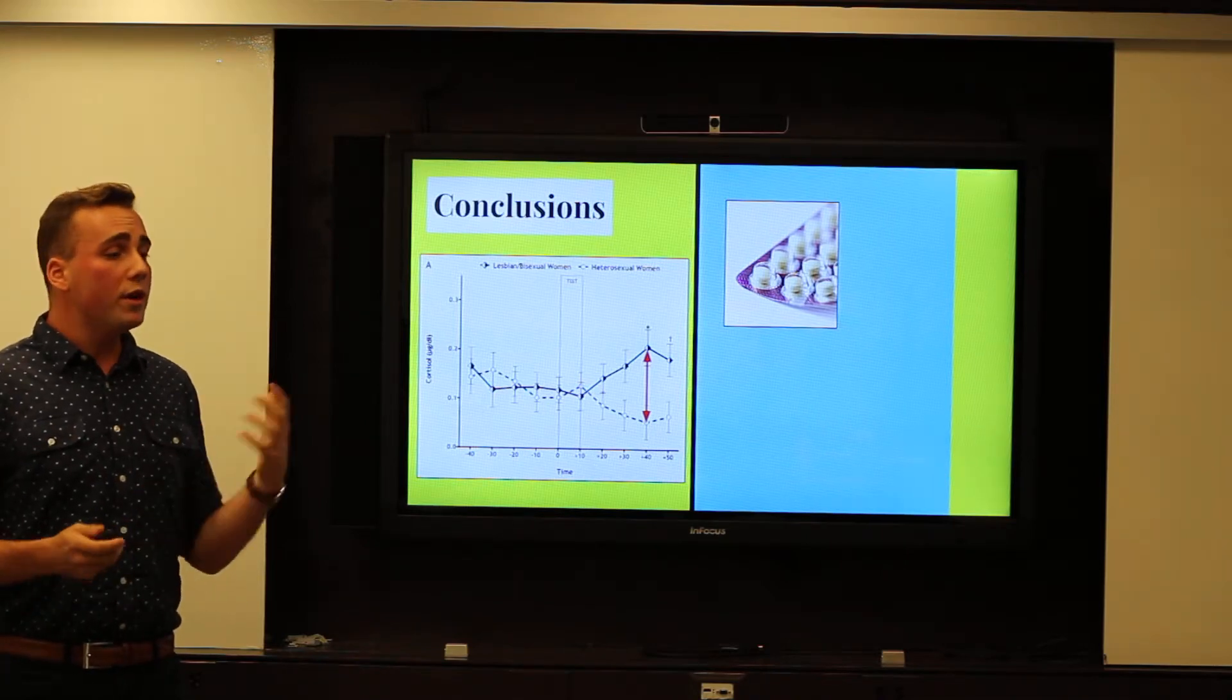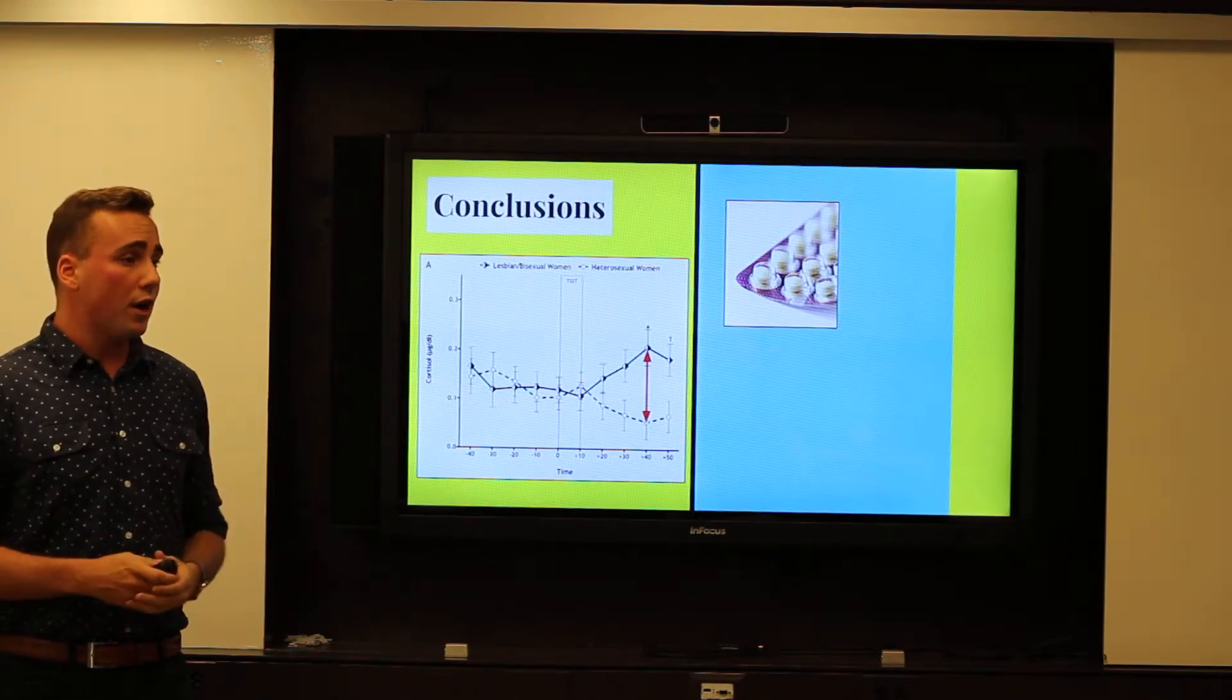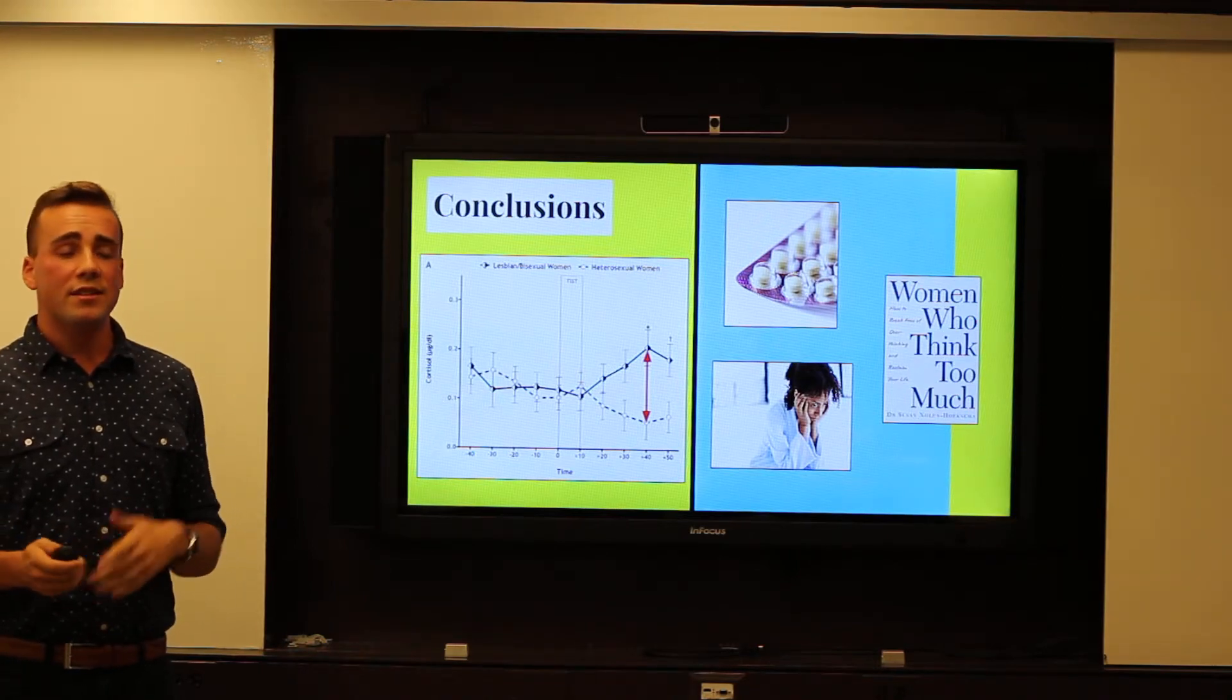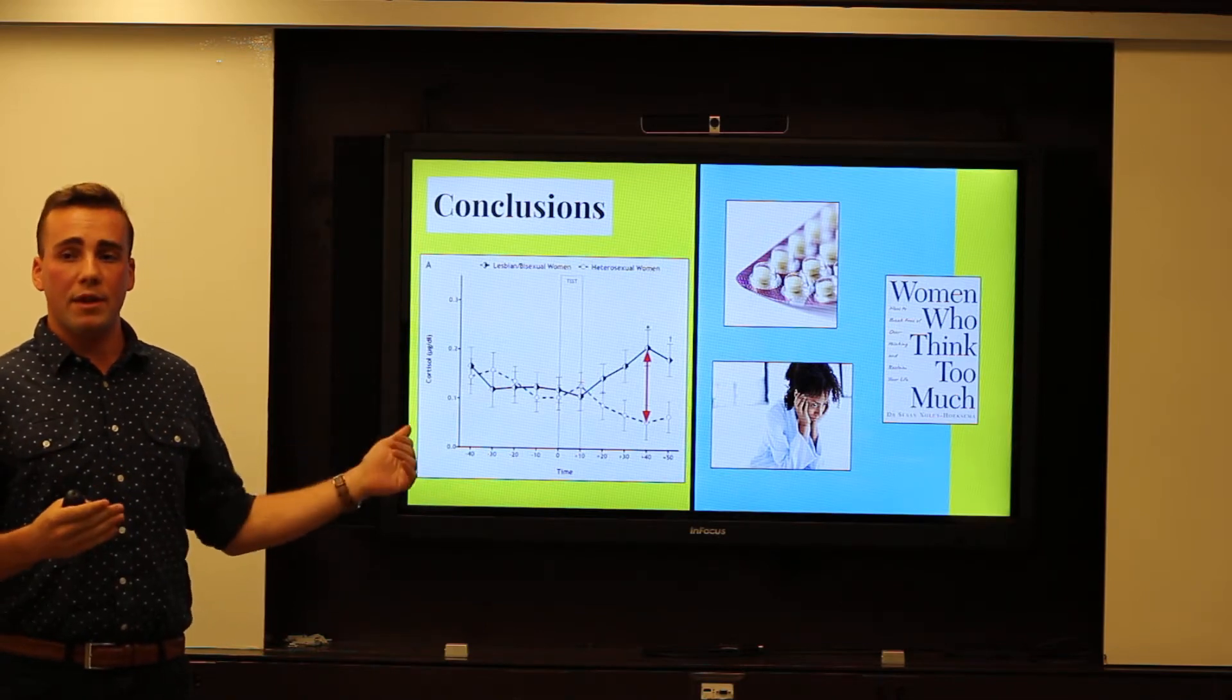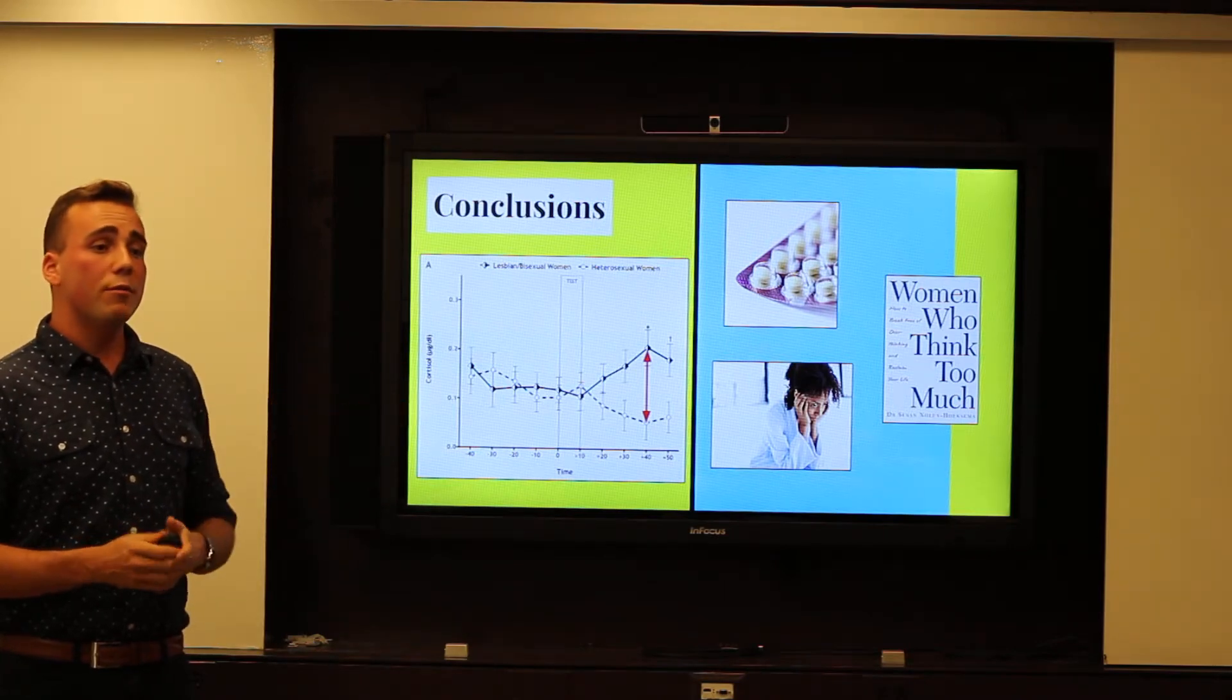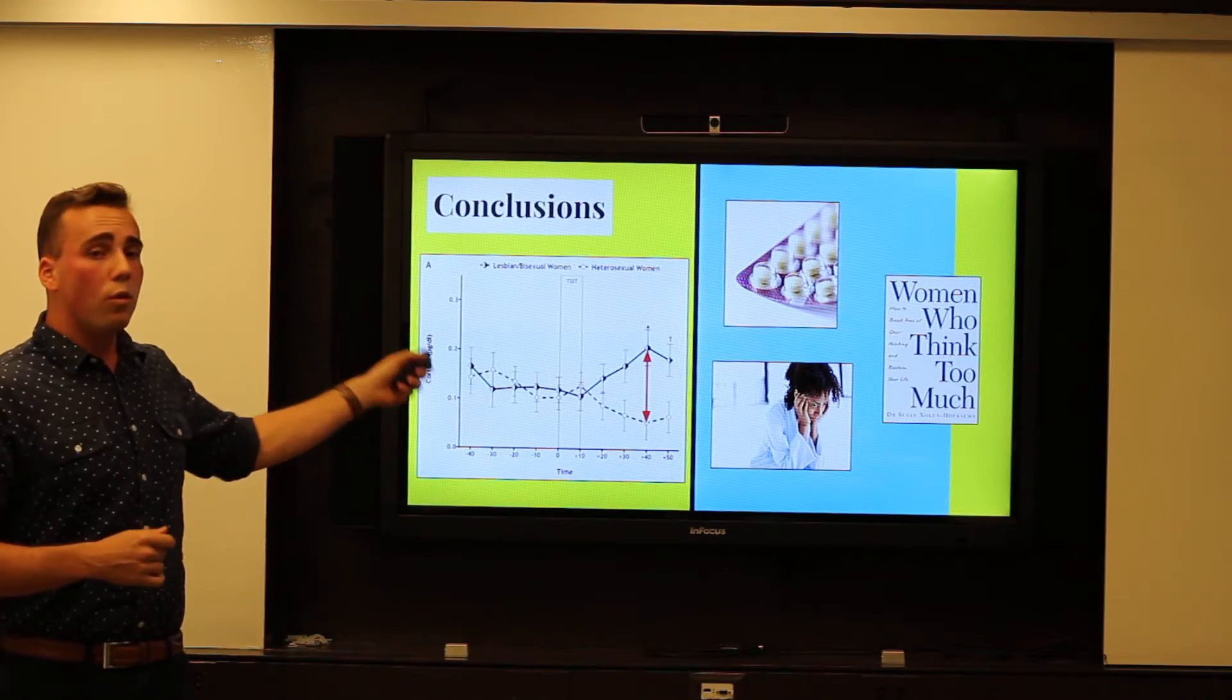Oral contraceptive use was actually shown to lower one's stress response in women. Subsequent studies have shown that women who were on birth control just have subdued stress responses as opposed to women who were not. In addition to something called the rumination theory. The rumination theory is similar to anxiety, except instead of worrying about something in the future, you worry about something that has already happened. This has been shown to predominantly affect women, and in studies since this study has actually come out, has shown that it predominantly affects queer women in general. So this is just one of the many reasons they think why this difference occurred.